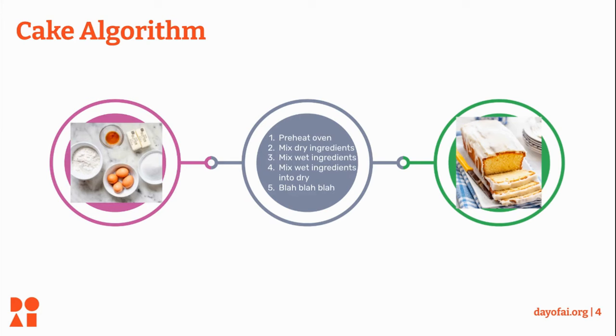So in this example, what are my inputs? What are the steps to cook the cake? What is the output?